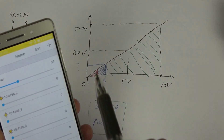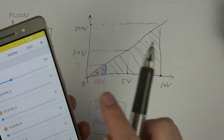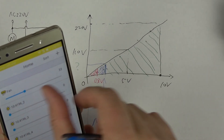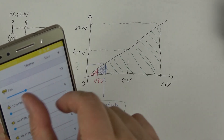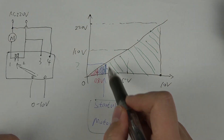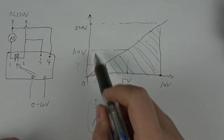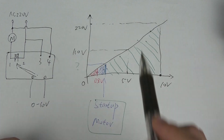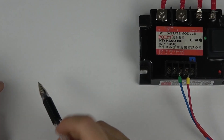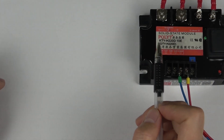Okay, this is how to control the output voltage to change the speed. Now I will tell you how to choose this SSR current. Like this one is 10 ampere.